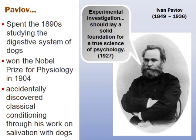A notable figure when it comes to classical conditioning is Pavlov. In the 1890s, he was a physiologist who spent time studying the digestive system of dogs. He's known for winning a Nobel Prize for physiology in 1904, and by complete accident came across what he created and called classical conditioning — something he realized through his work with dogs.